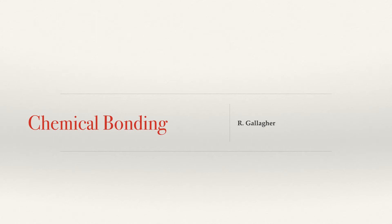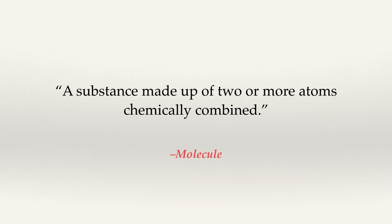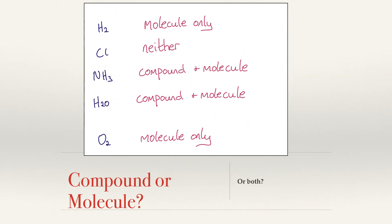Chemical bonding. A compound is defined as a substance that is made up of two or more different elements chemically combined. A molecule is defined as a substance made up of two or more atoms chemically combined. For your leaving certificate, you may be required to identify if a substance is a compound or a molecule. Below are some examples — simply remember the definitions and apply them.